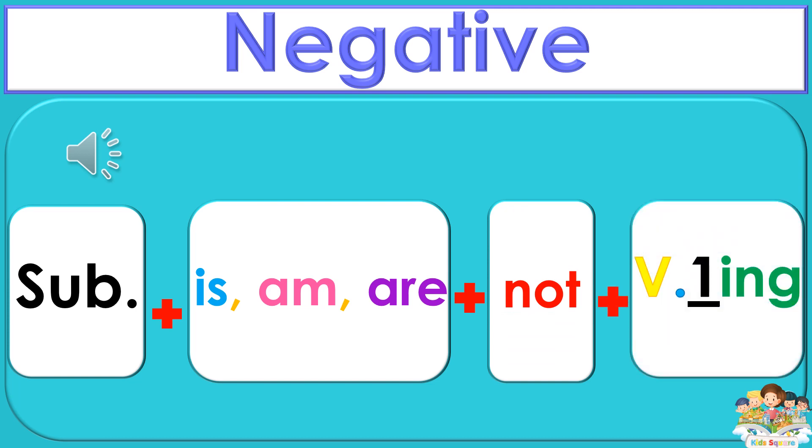ประโยคปฏิเสธ: Subject + is/am/are + not + Verb ช่องที่หนึ่ง + ing